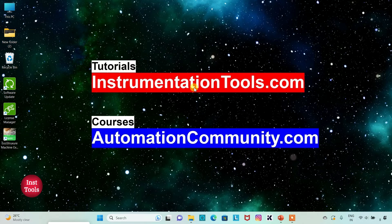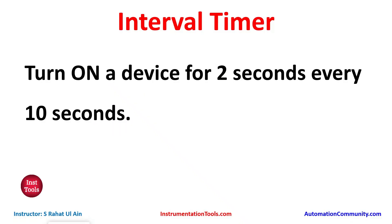Let's look at the example first. Interval timer: turn on a device for two seconds every ten seconds. It means a device should remain on for two seconds and then remain off for ten seconds, then again on for two seconds, off for ten seconds — and this should repeat. Let's move to EcoStructure Machine Expert where we will draw a ladder diagram for the interval timer.